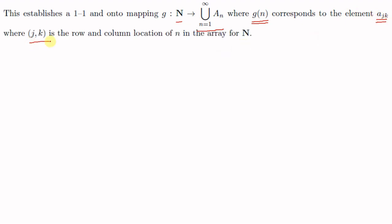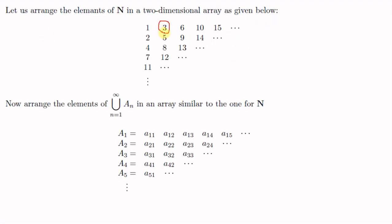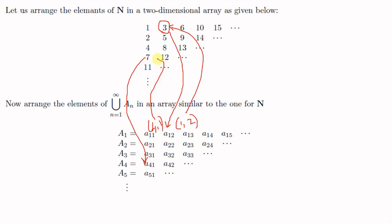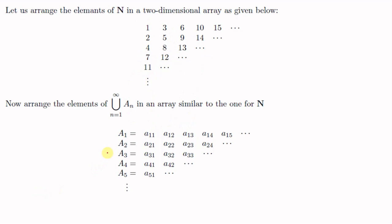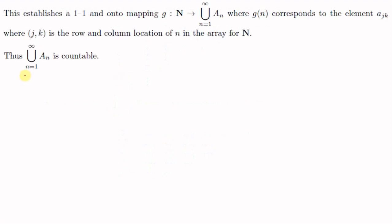This correspondence establishes a one-to-one onto mapping g from ℕ to ⋃(n=1 to ∞) An, where g(n) corresponds to the element ajk, and jk is the position of n in the arrangement. For example, g(3) = a12 because 3 is in position row 1, column 2, and g(7) = a41 because 7 is in row 4, column 1. This establishes a one-to-one correspondence between ℕ and ⋃(n=1 to ∞) An, showing that the infinite union is countable.